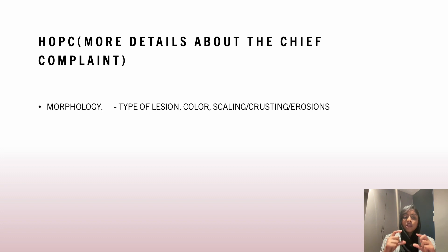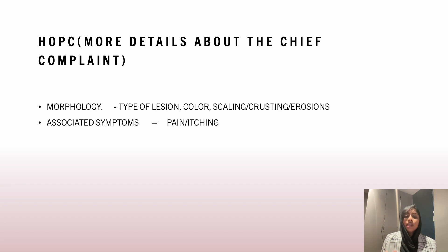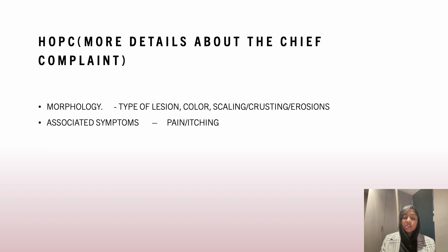By asking about morphology, you are building a picture of the clinical lesion which you will further confirm during examination. The next aspect is associated symptoms, for example pain or itching. Eczematous conditions are associated more with itching, whereas squamous cell carcinoma or erosions tend to be more painful or sore. So it's always good to ask about the morphology and associated symptoms together.